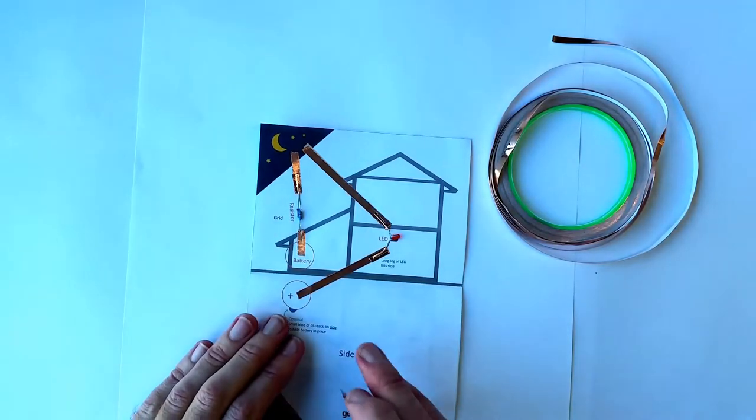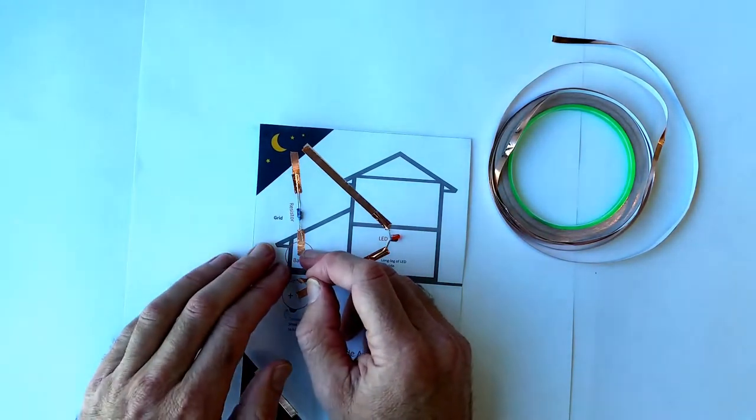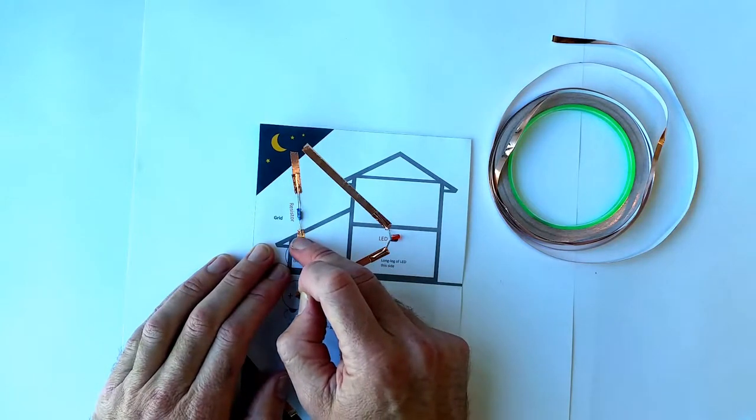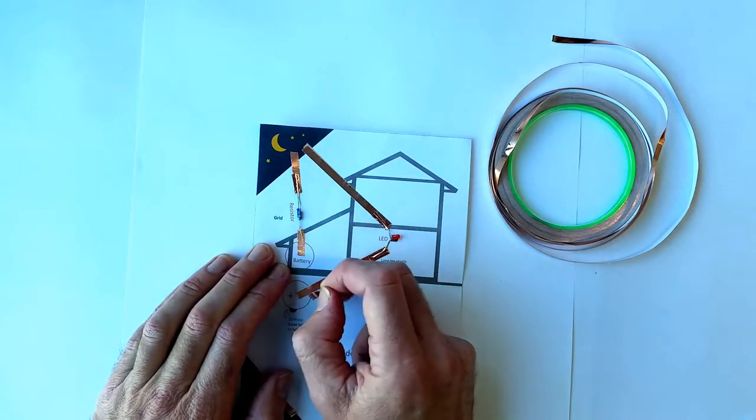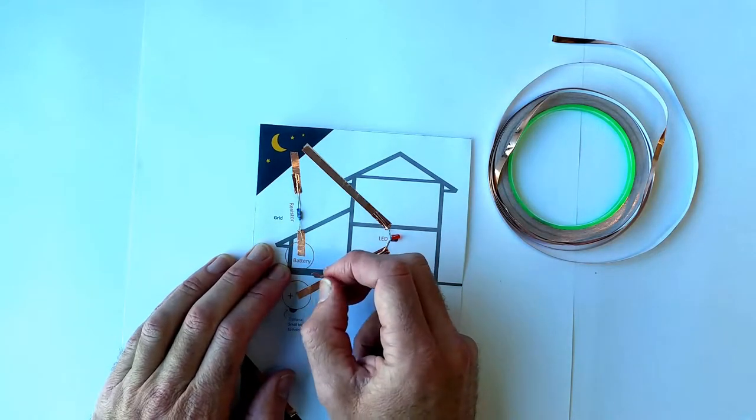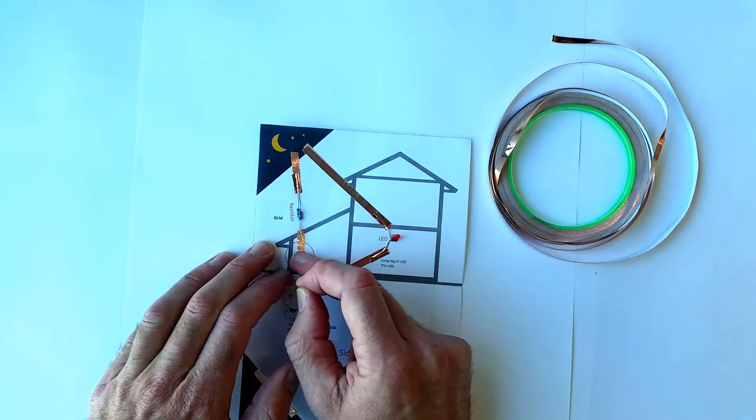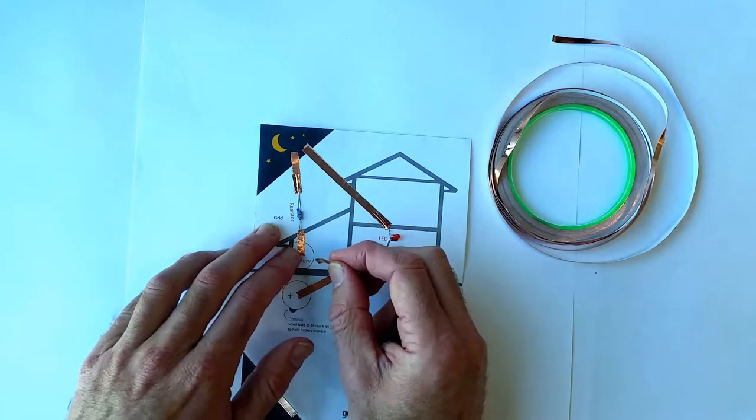We're almost finished putting down all the components. I just trimmed the leg of the resistor—I used a pair of scissors—so that it stays just outside the battery, so the battery can form a good contact with its copper tape underneath.